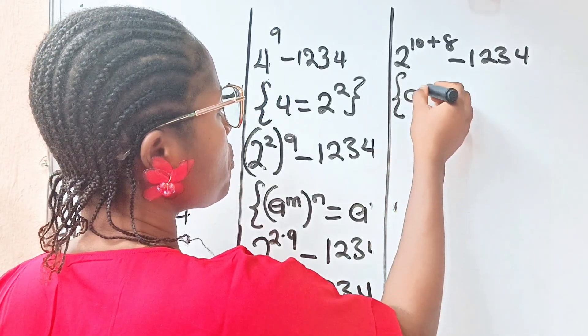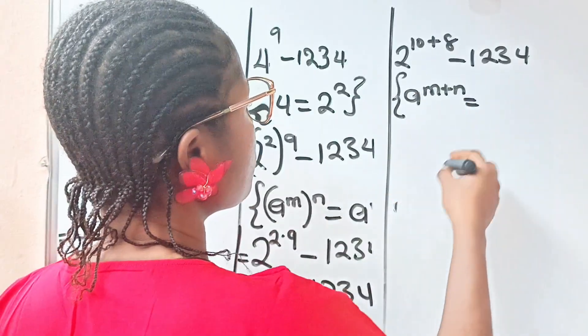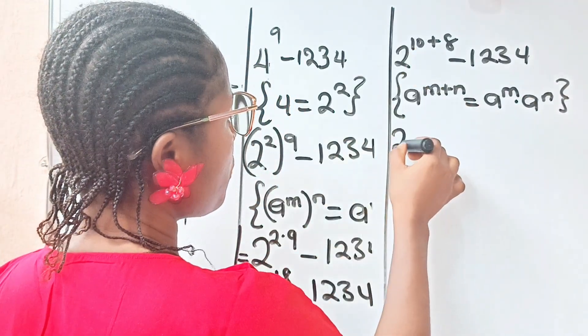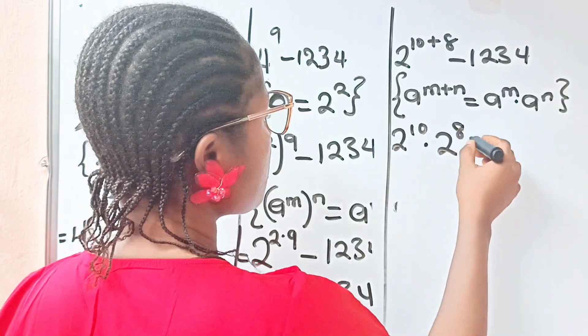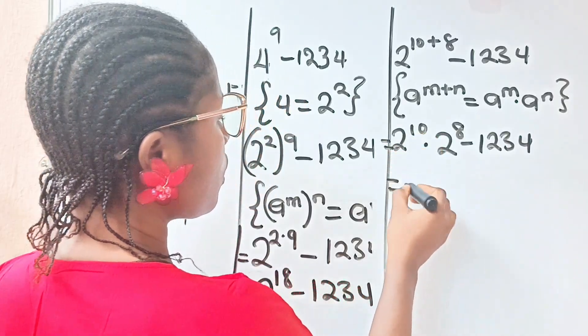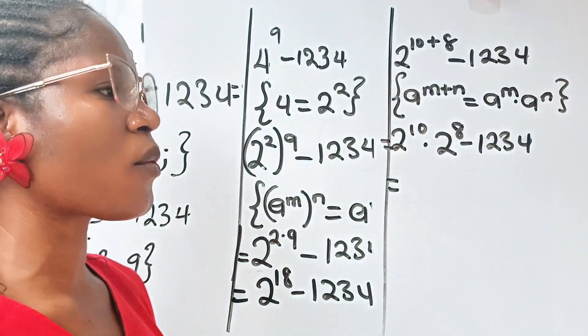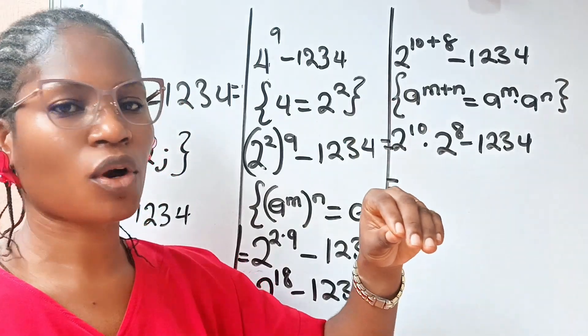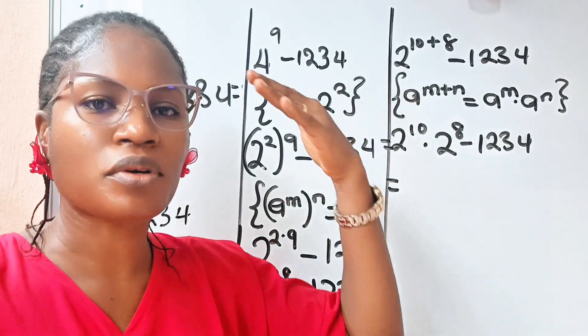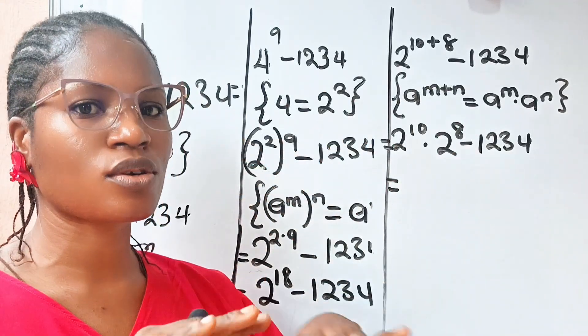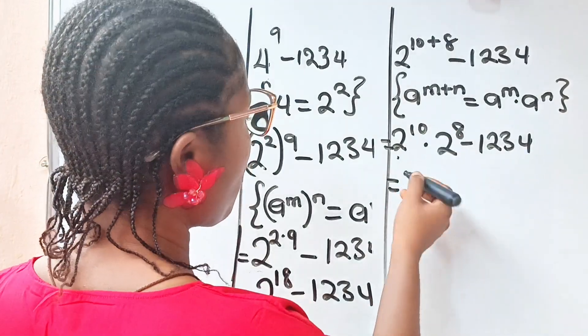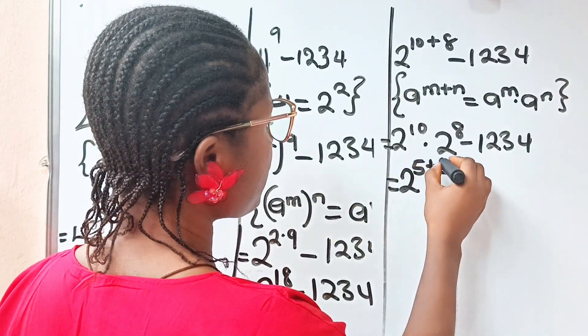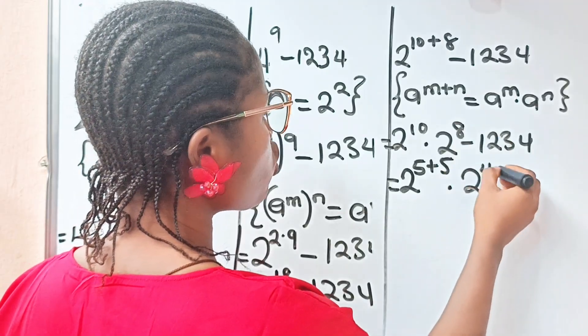So, now remember that 2 to the power of 10 plus 8 is equal to 2 to the power of 10 multiplied by 2 to the power of 8. So, we can write this as 2 to the power of 10 multiplied by 2 to the power of 8 minus 1234. Now, remember that we are not asked to use calculator. So, we definitely try not to use one. That is why I'm breaking this down. Because 2 to the power of 10, what is it? Yeah, some of you might cram it all, but I don't cram.